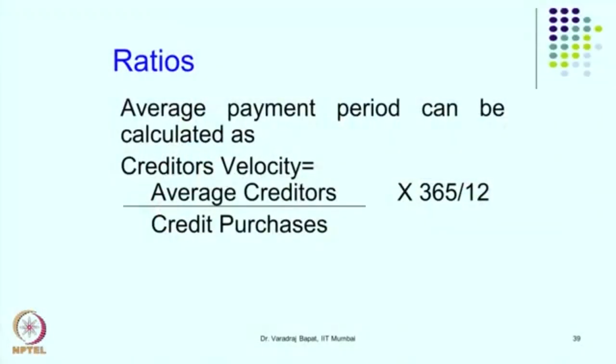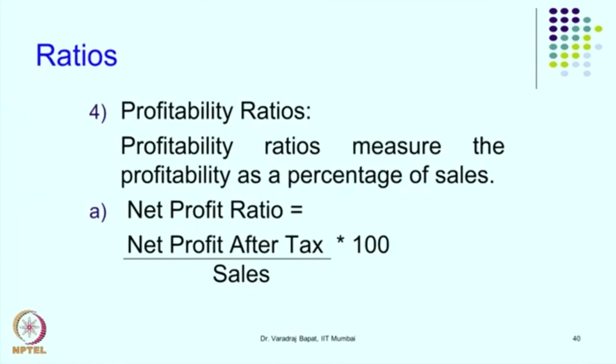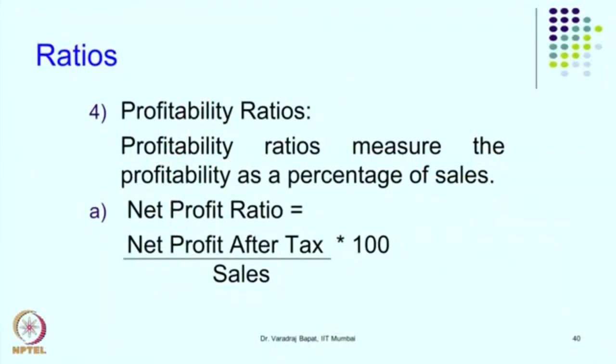Now we will go to the next type of ratios — profitability ratios. In fact our earlier discussion on ratios had started with the net profit ratio. These ratios are also known as P&L ratios because both numerator and denominator come from the P&L account. As the name suggests, they tell us about the profitability of the business in relation to sales. One important ratio is the net profit ratio: net profit after tax divided by sales.